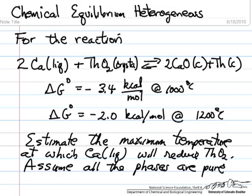In this case we are calculating chemical equilibrium where we have liquid calcium and a crystal solid reacting to form two other crystals, two other solids, and we are given ΔG° at standard state conditions at 1000 degrees and 1200 degrees centigrade.